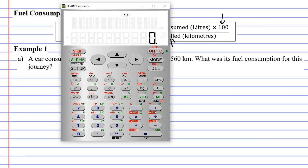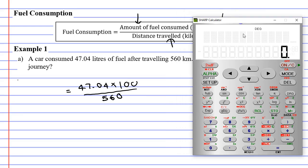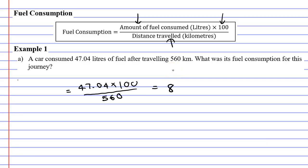Bringing our calculator up now, we're going to go 47.04 times 100, divide 560, equals, and we get 8.4.